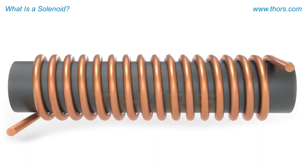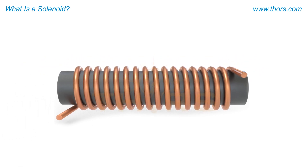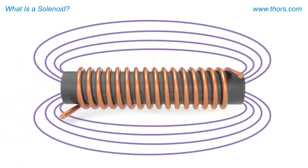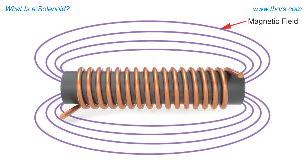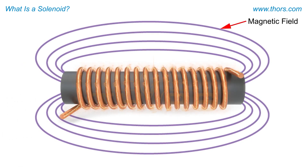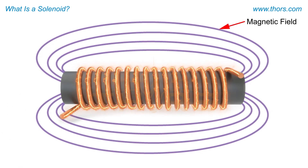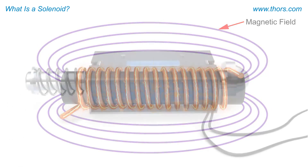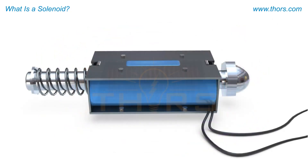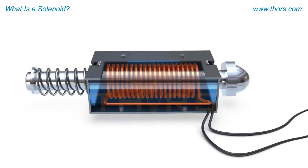A solenoid is an electromagnetic device that generates a magnetic field when an electric current passes through it. Typically, a solenoid consists of a tightly wound coil of wire around a metallic core.